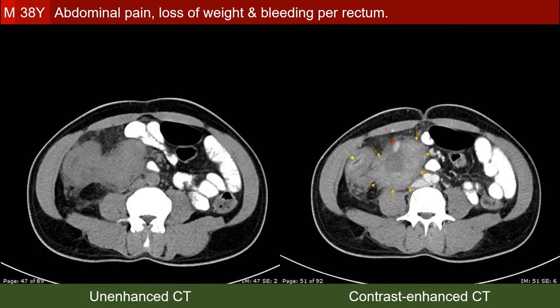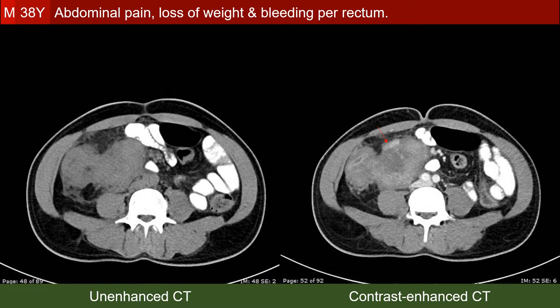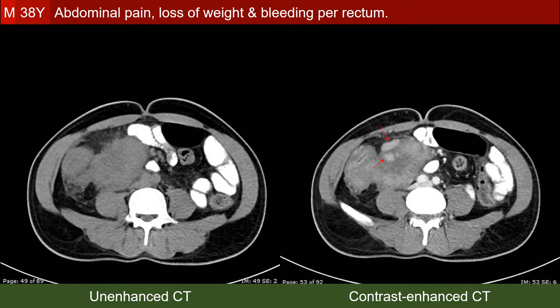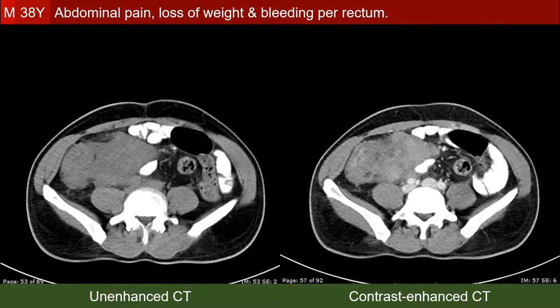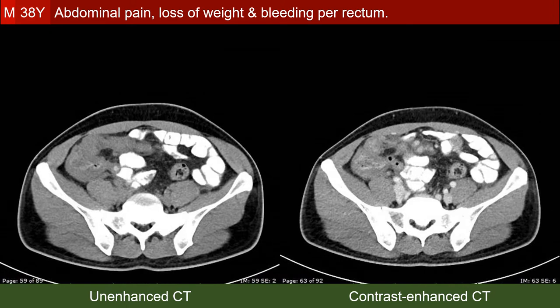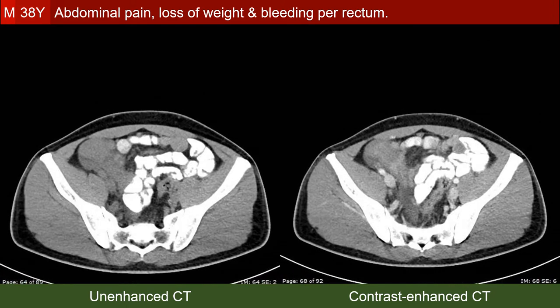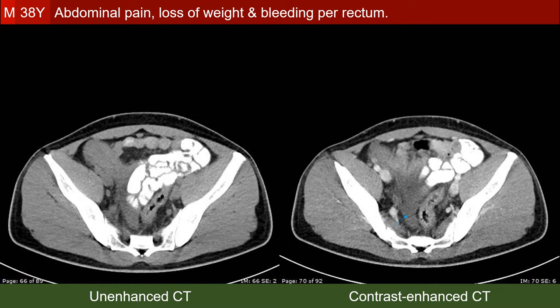The red arrow points to a very strongly enhancing structure. The enhancement level is comparable to that of the intravascular enhancement, so this seems to be an aneurysm or pseudoaneurysm related to the anterior aspect of the lesion. There are multiple aneurysms or pseudoaneurysms, and there is free peritoneal fluid within the pelvic peritoneal recesses.